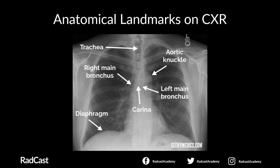It is essential to recognise key anatomical landmarks on a chest x-ray to safely confirm NG tube placement. These include the trachea, the right and left main bronchus, the carina (the bifurcation of the two main bronchi), the right and left hemidiaphragm, and the aortic knuckle — the chest x-ray appearance of the distal aortic arch arching over the left main bronchus. The oesophagus is difficult to visualise on a chest x-ray but typically lies to the left of the trachea and medially to the aortic arch.